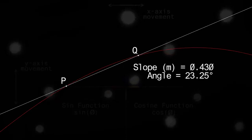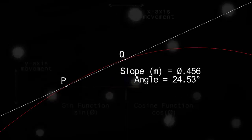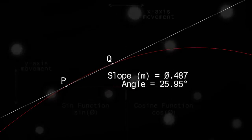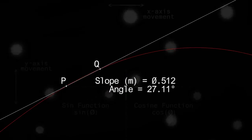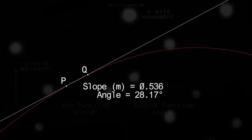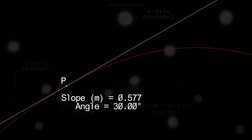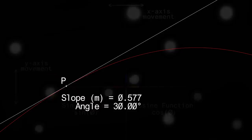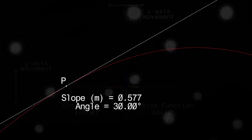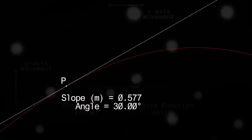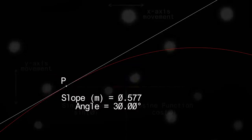As point Q approaches point P, the approximation becomes more and more accurate. If we make point Q infinitely close to point P, the secant line touches only a single point on the function and becomes a tangent line. The slope of the tangent line gives us an exact value of the instantaneous rate of change at the single point P — our derivative.